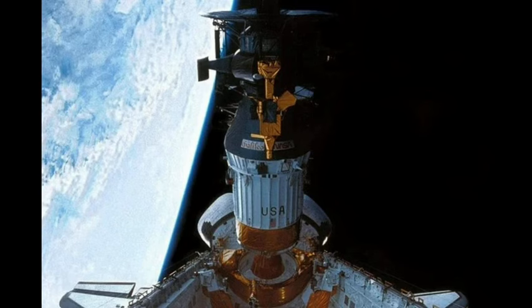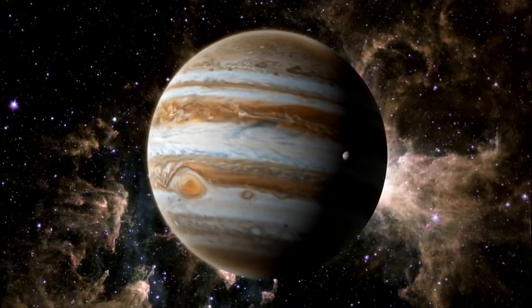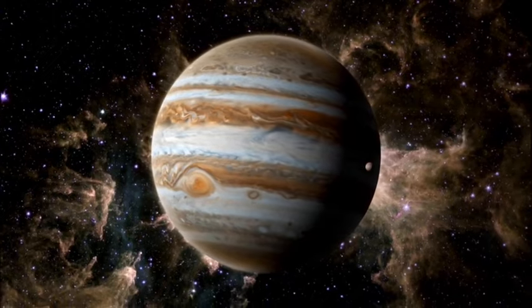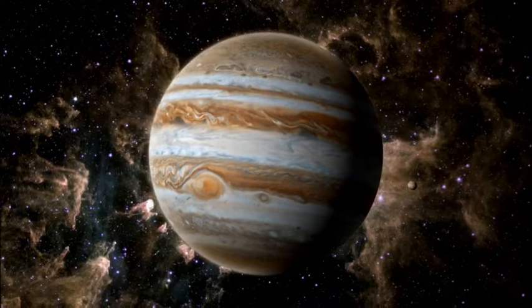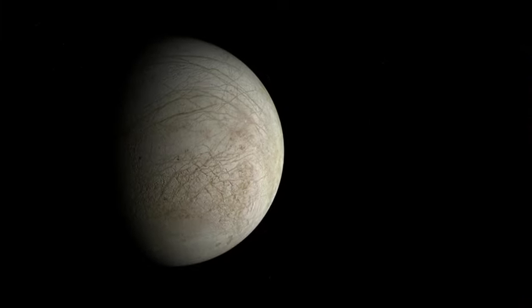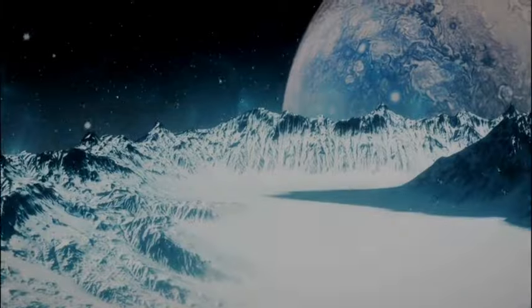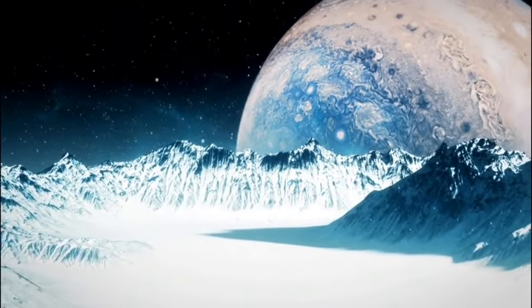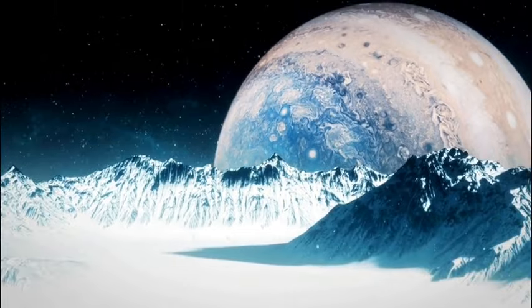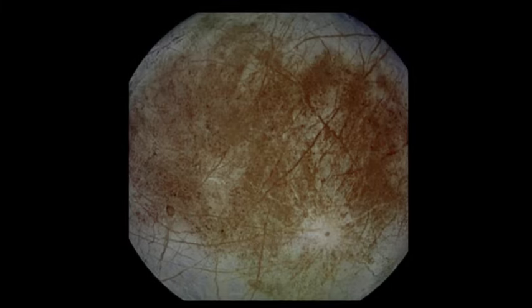One of the most important measurements made by the Galileo mission showed how Jupiter's magnetic field was disrupted in the space around Europa. This measurement strongly implied that a special type of magnetic field is being created within the icy moon by a deep layer of some electrically conductive fluid. Based on Europa's icy composition, scientists think the most likely material to create this magnetic signature is a global ocean of salty water.